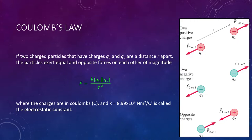k is a constant, known as the electrostatic constant. The value for k is 8.99 times 10 to the 9 newton meter squared per coulomb squared. For purposes of this course, it's totally fine to just use 9 times 10 to the 9 — much easier to remember and to write, so just use that for basic calculation purposes.